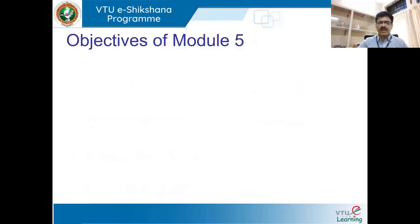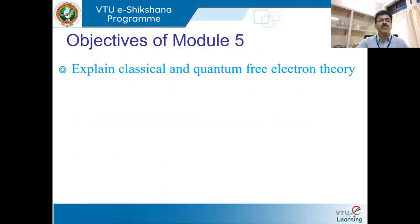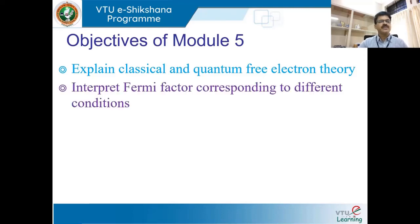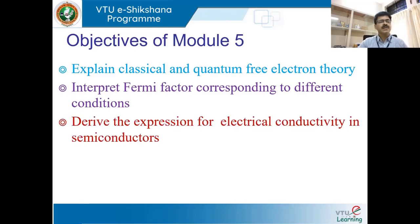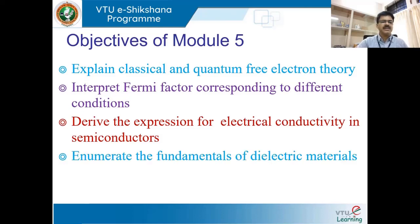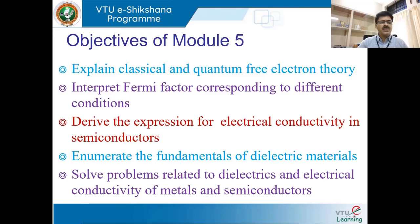Let us see what are the objectives of Module 5. The first is to explain the classical and free electron theory of metals. The second is to interpret the Fermi factor corresponding to different conditions. The third is to derive the expression for electrical conductivity in semiconductors. The fourth is to illuminate the fundamentals of dielectric materials. And the last is to solve problems related to dielectric and electrical conductivity of metals and semiconductors.